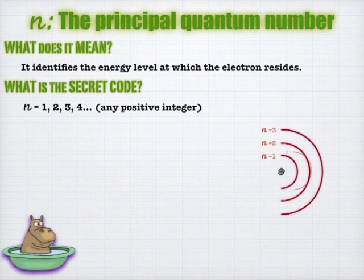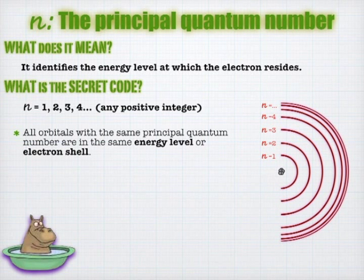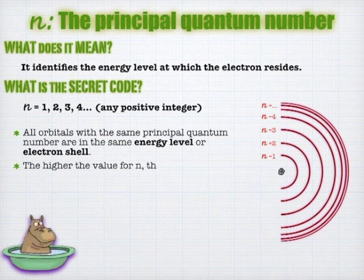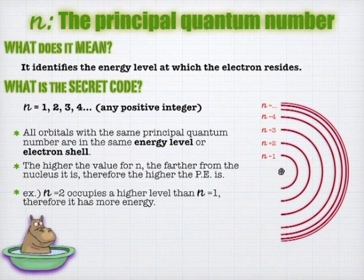You can have any value for N you want as long as it's not a half number or zero or negative. We don't need that many N's to cover the electrons in the ground state of any atom. But if we want to have excited states, then N can go quite far, technically all the way to infinity. Once you have the same N, you're considered to be in the same energy level, or some people say electron shell. The higher value for N, the farther away from the nucleus you are, therefore the higher potential energy you have.